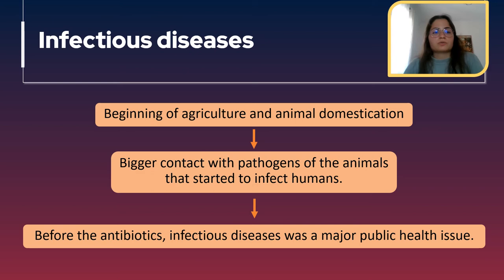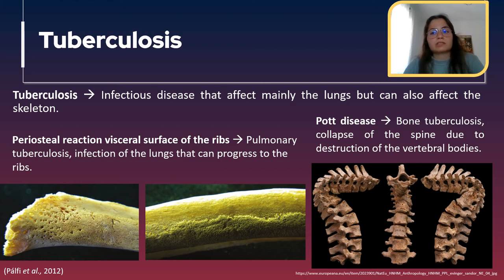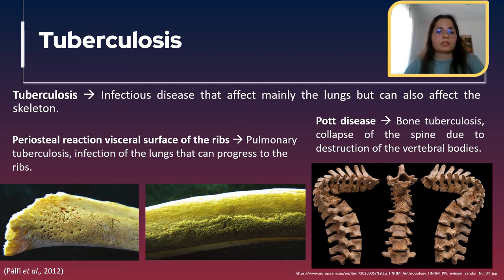I'm going to present three infectious diseases that caused a lot of deaths: tuberculosis, syphilis, and leprosy — chosen because they have the most impressive bone lesions. First, tuberculosis is an infectious disease that mainly affects the lungs but can also affect the skeleton. In the skeleton there are two main lesions that can be associated with tuberculosis: periosteal reaction on the visceral face of the ribs, and Pott's disease. In the ribs, the reaction occurs because the lung infection can pass to the ribs on the side in contact with the organs.